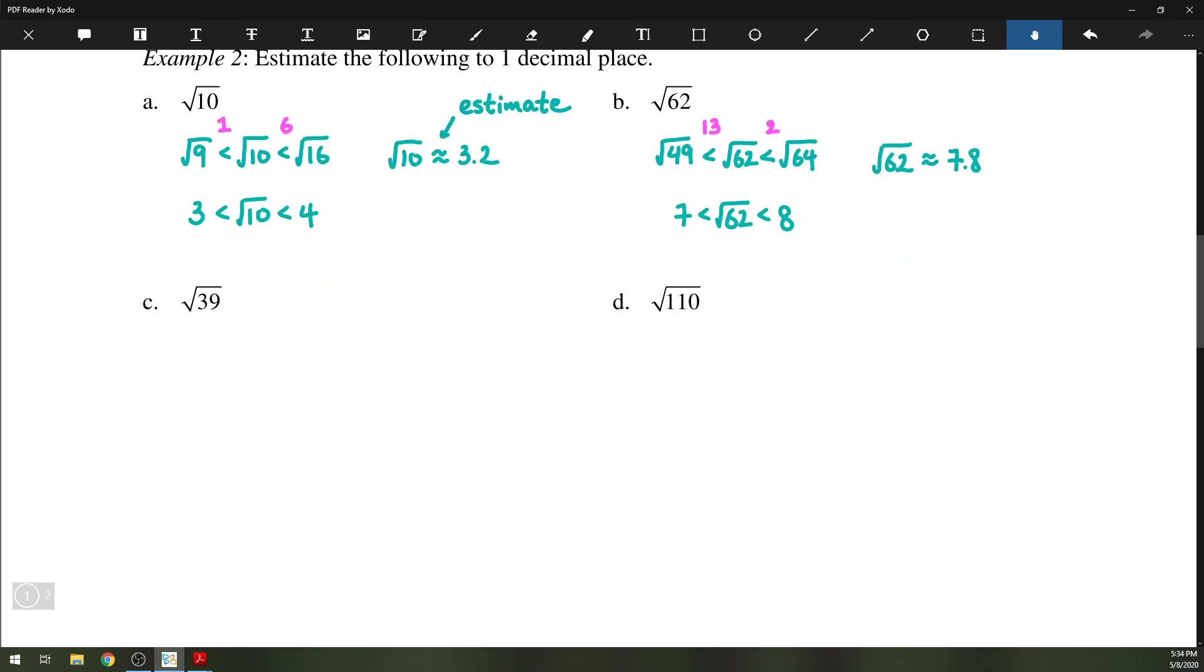Just a couple more here, we have 39. So if we're looking at the square root of 39, then the closest perfect square is probably 36. And then the next one up is 49. So the square root of 39 is somewhere between 6 and 7.